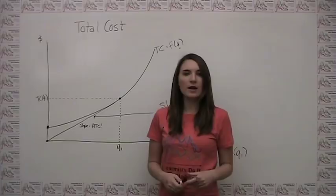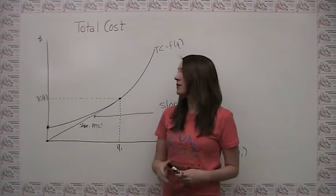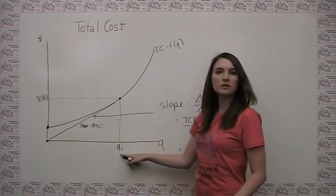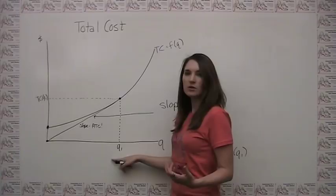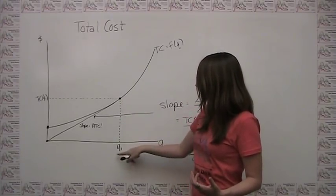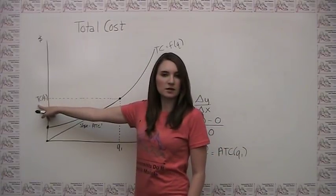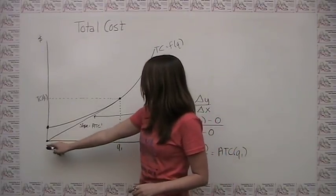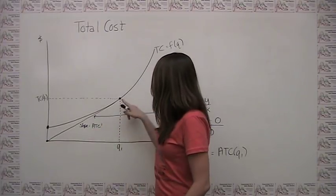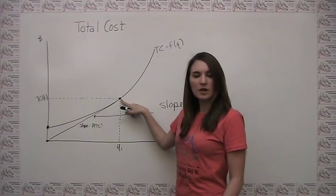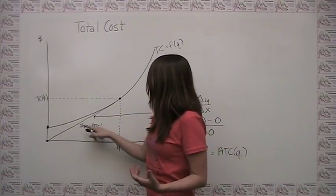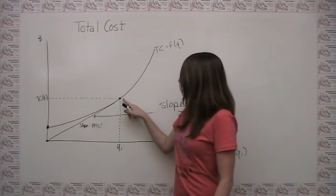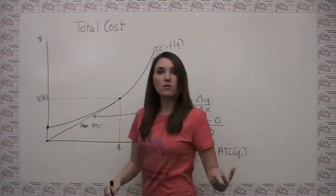We can also think about how to represent and calculate average total cost by looking at our total cost graph. I chose a particular quantity Q1 that we want to calculate average total cost for, and I noted that point on the graph — Q1 and the total cost of producing quantity Q1. Then I drew a straight line from the origin to our point in question on the total cost curve. As it turns out, the average total cost of producing this quantity is just the slope of this line between the origin and the point on the total cost curve.